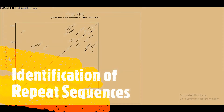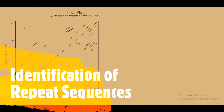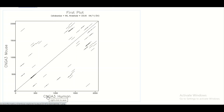This dot matcher graph is particularly very handy when we want to observe repeat sequences. Here on both axes we are going to set the same sequences, and then these sequences will be aligned with one another, and we will observe the repeat sequences if they are present in our sequence.